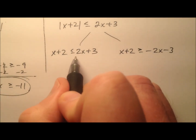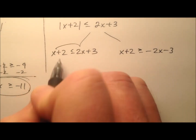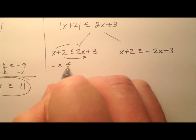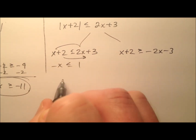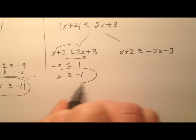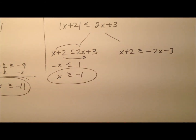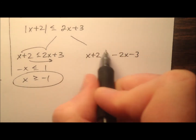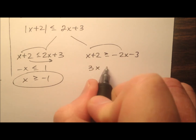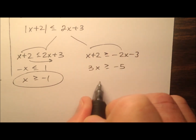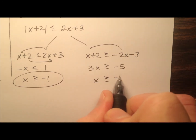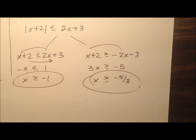Now it's just a matter of solving. So negative x is less than or equal to one, meaning x is greater than or equal to negative one. And for the other piece, three x is greater than or equal to negative five, so x is greater than or equal to negative five thirds.